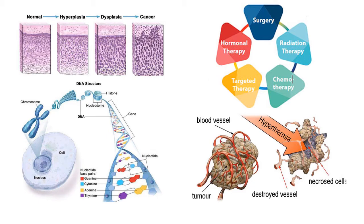Another kind of treatment is hyperthermia treatment. Hyperthermia uses high temperature heat to cause cancer cell death by increasing the temperature. A limitation of conventional hyperthermia is that it can damage healthy tissue when the temperature is increased. To increase efficiency, researchers are focused on target-specific hyperthermia, which can avoid the undesired side effects.